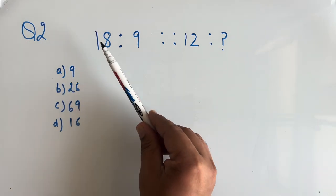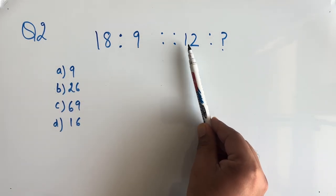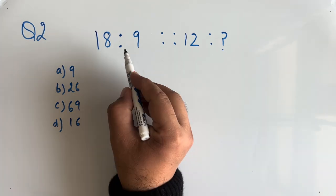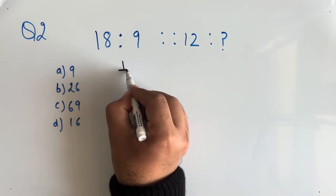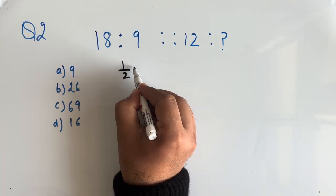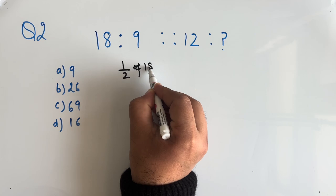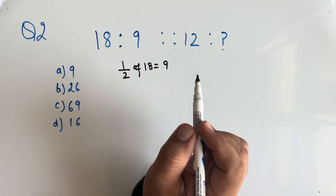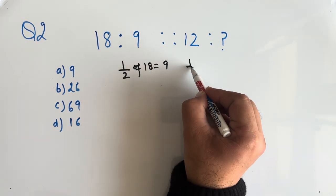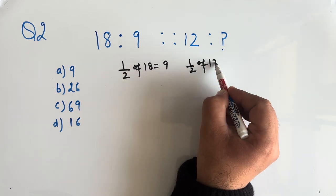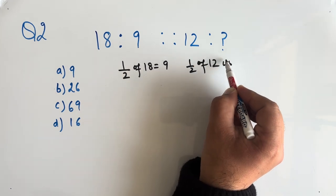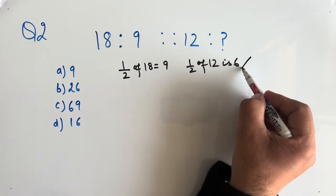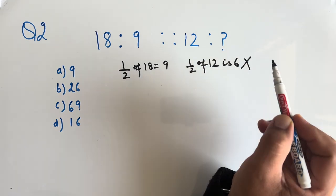Question number 2: 18 is to 9, what is 12 is to? Now if we take 18, half of 18 is 9. In the similar way, half of 12 is 6. But 6 is not in the option, so this logic will not work.